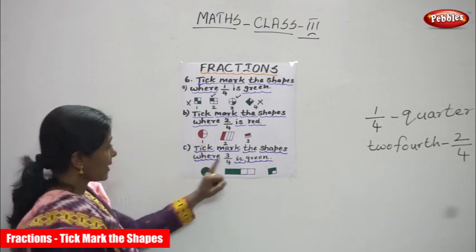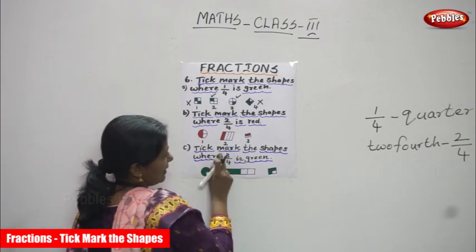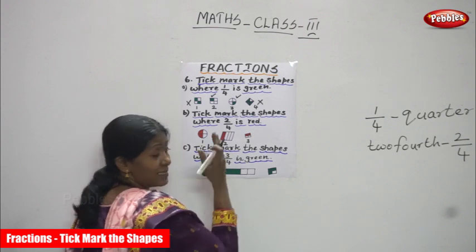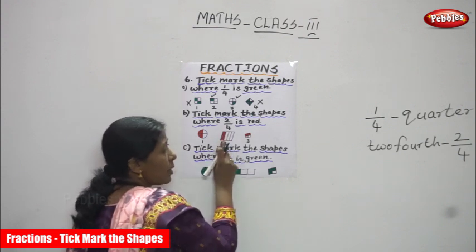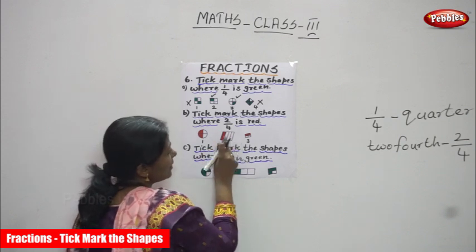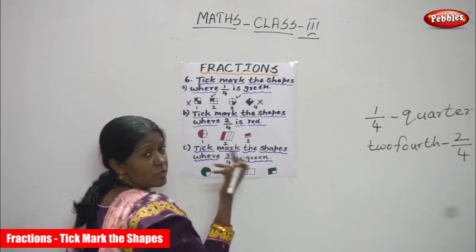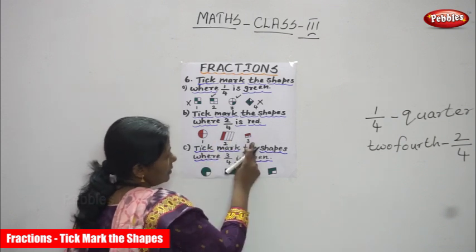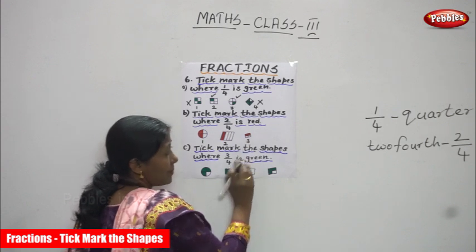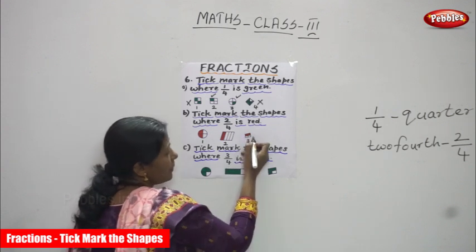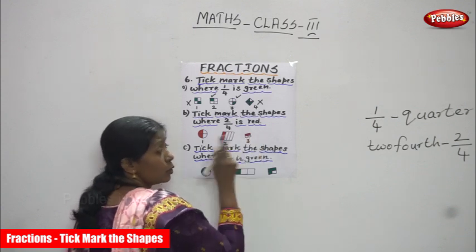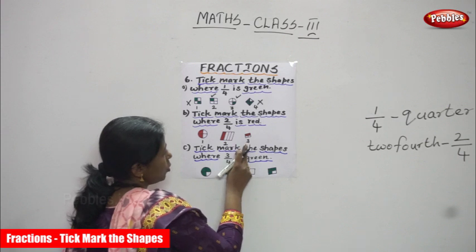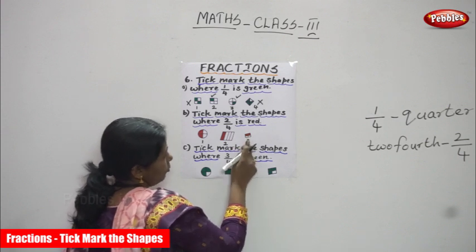The next diagram is a rectangle shape, a little slanting. I shaded only one part in red color and the remaining three parts I didn't shade. The third diagram is also a square — a slanting square. I cut it into four equal parts and shaded two parts only, so this is also two by four.